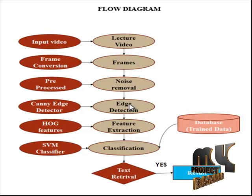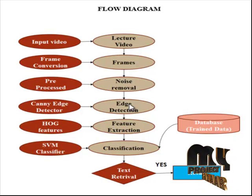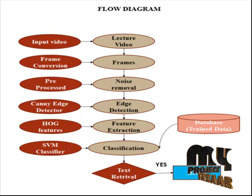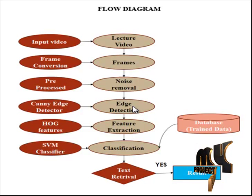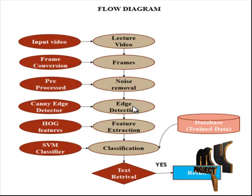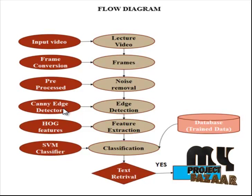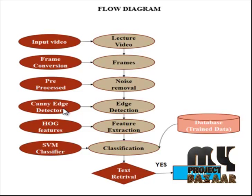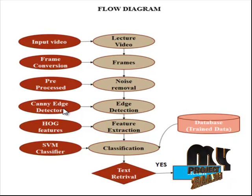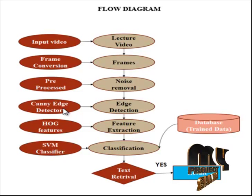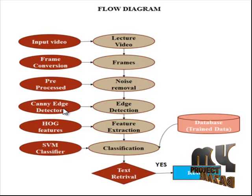Next in the edge detection process, the Canny edge detector is used. It uses a multi-stage algorithm to detect a wide range of edges in images. Canny's aim was to discover the optimal edge detection algorithm. The criteria are: good detection — the algorithm should mark as many real edges as possible; good localization — edges marked should be as close as possible to the real edge; and minimal response — a given edge should only be marked once and image noise should not create false edges. To satisfy these requirements, Canny used a calculus of variations to find the function which optimizes a given functional. The optimal function is described by the sum of four exponential terms, but it can be approximated by the first derivative of the Gaussian.